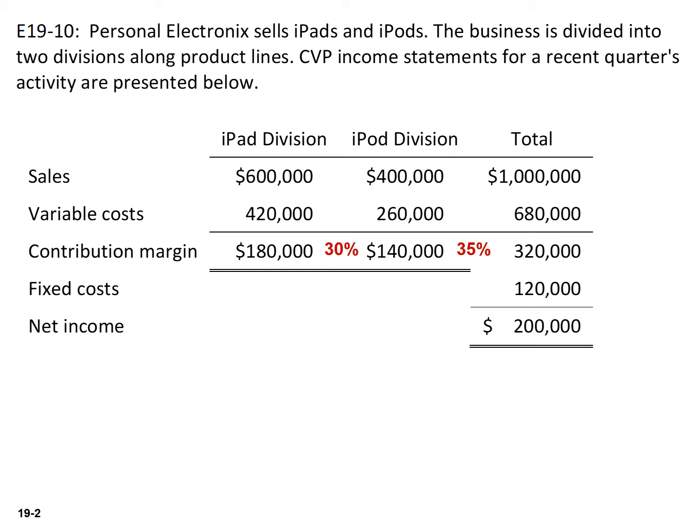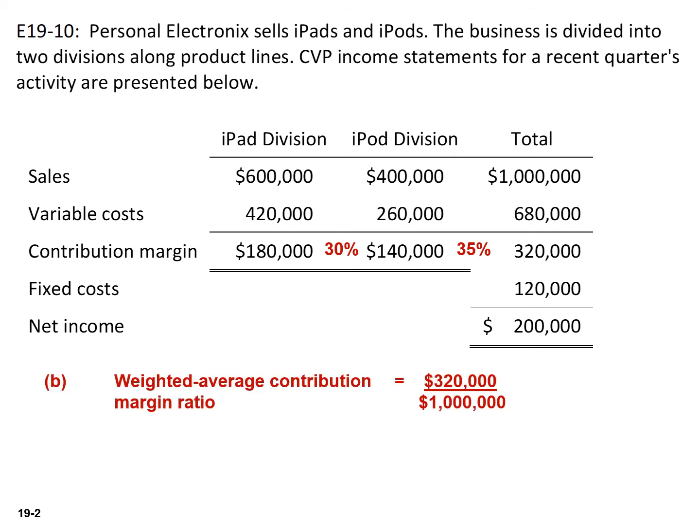The next thing we need to calculate is the company's weighted average contribution margin ratio. We can calculate this by taking the total contribution margin of 320,000 and dividing that by total sales of a million, and you'll get 32%.